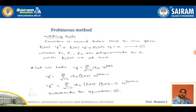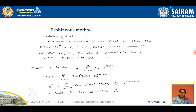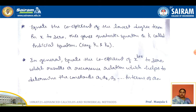So what is the working rule in the Frobenius method? First, we have to take y = summation from r = 0 to infinity of a_r x^(k+r). From this, we can find the derivatives y' and y''.